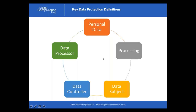The data subject is the individual whose data you are processing. The data controller is the organisation that's collecting that data for the purposes of processing and determining how it's processed. Data processors are third parties who do the processing on behalf of the controller. In a traditional marketing environment, if you collect email addresses for marketing, you're the data controller, and if you pass that list to a third party for email delivery, that third party is the data processor.